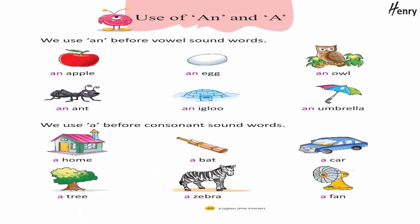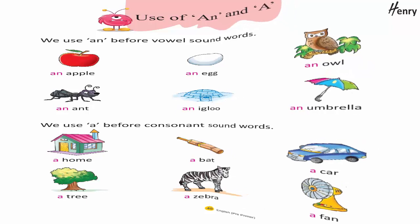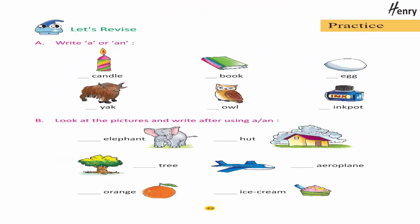Use of A and An: We use 'an' before vowel sound words — an apple, an egg, an owl, an ant, an igloo, an umbrella. We use 'a' before consonant sound words — a home, a bat, a car, a tree, a zebra, a fan.